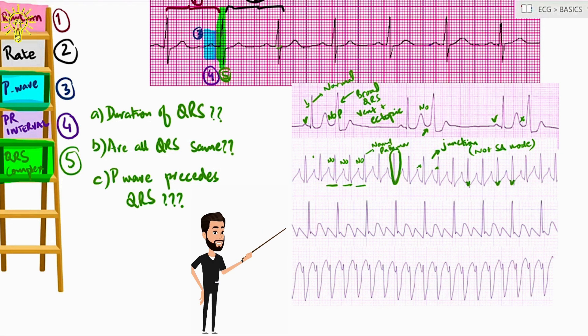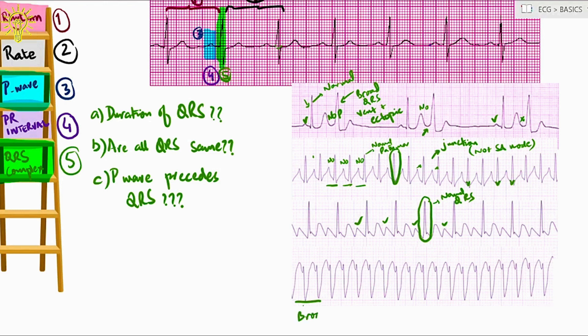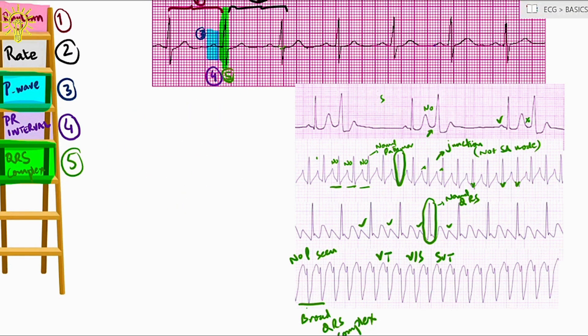Below is atrial flutter ECG. The flutter waves are evident and QRS is narrow. In the last ECG, the QRS are broad. I cannot see the P wave. It could be ventricular tachycardia or it could be SVT. How to differentiate, we will discuss in subsequent episodes.